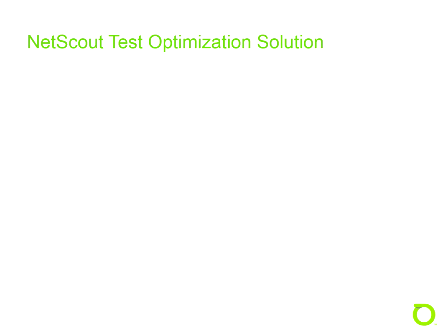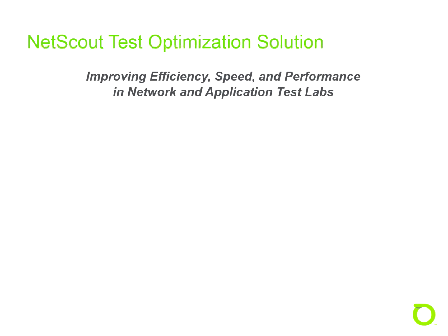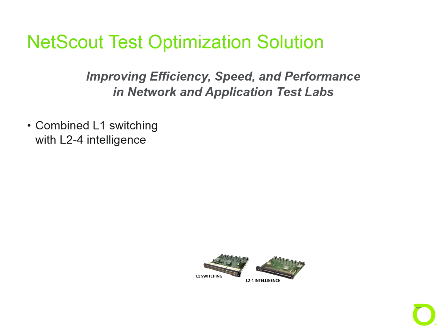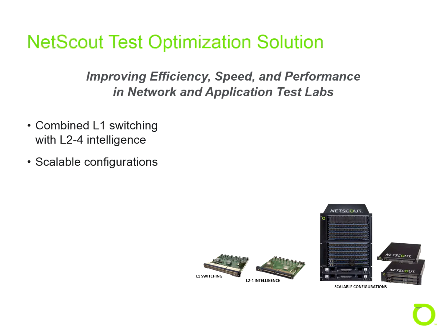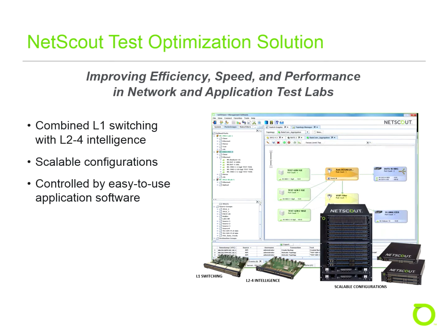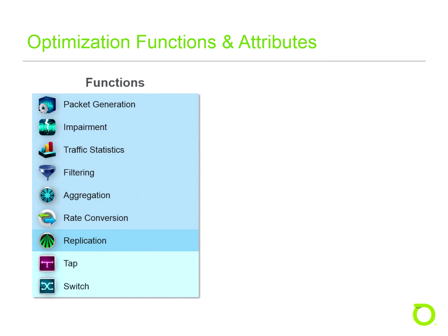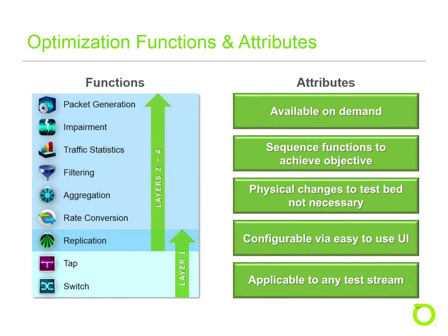NetScout's test optimization solutions help improve the efficiency, speed, and performance of network and application test labs. This is done by combining Layer 1 switching with Layer 2 through 4 intelligence in scalable configurations, all controlled by easy-to-use application software or third-party tools. This combination enables lab managers and test engineers to access functions that would otherwise require additional equipment, simplifying test configuration and reducing variability in test execution — applicable to any test stream without needing physical lab access.